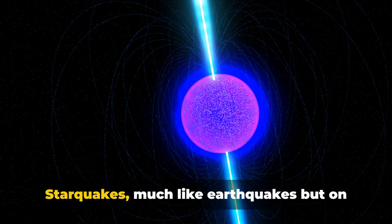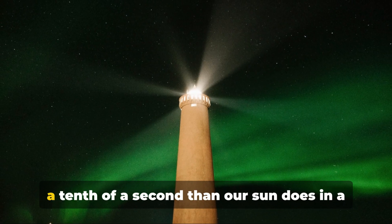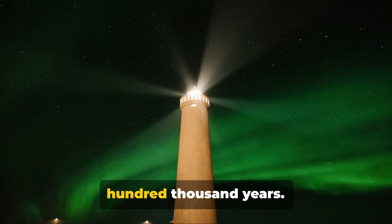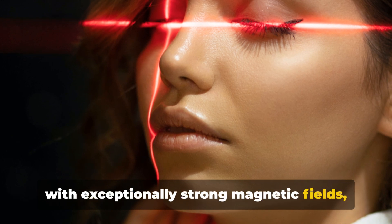Starquakes, much like earthquakes but on a neutron star, can release more energy in a tenth of a second than our sun does in a hundred thousand years. And magnetars, which are neutron stars with exceptionally strong magnetic fields, emit high energy electromagnetic radiation like x-rays and gamma rays.